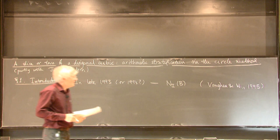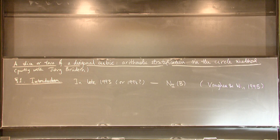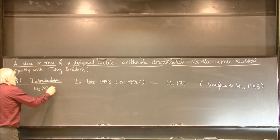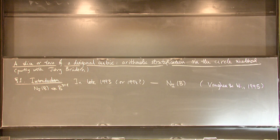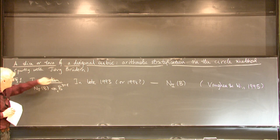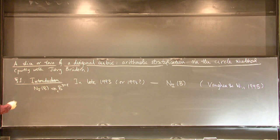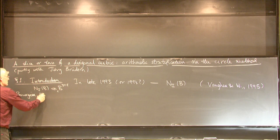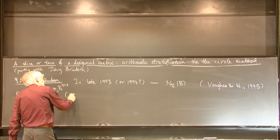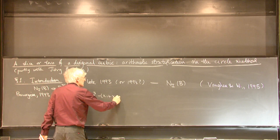The paper appeared in 1995 and was called 'On a certain nonary cubic form' — a cubic form in nine variables — motivated by some thesis work of Kent Bachman at the time. The classical result in connection with this problem is that N1(B) is bounded by B to the three plus epsilon: for any positive epsilon there's a constant giving an upper bound like B to the three plus epsilon.